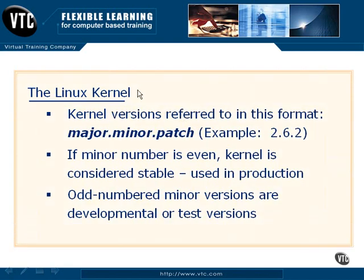The kernel version is actually a three-digit decimal number, and this allows us to identify exactly what version of the core Linux operating system we're running. It breaks down like this: our major kernel number is the first number, separated by a decimal for the minor revision number.